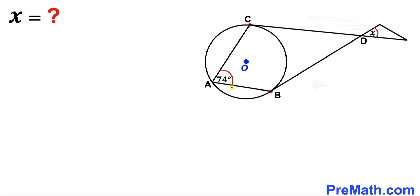Welcome to PreMath. In this video we have got this circle with center O as you can see in this diagram such that point B and this point C are our points of tangency and furthermore this angle BAC is 74 degrees and now our task is to find the value of this angle x.